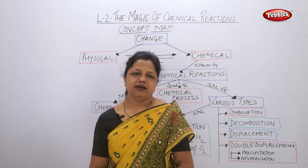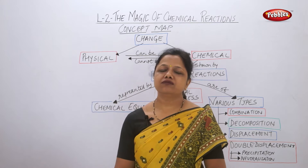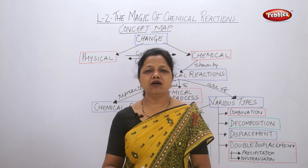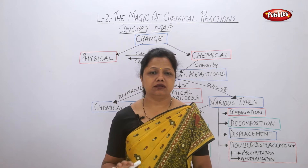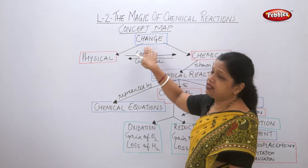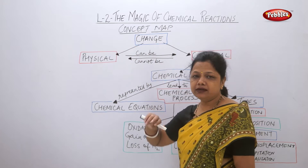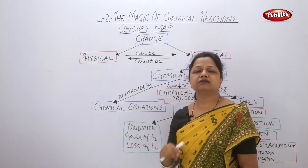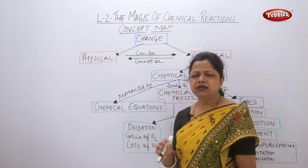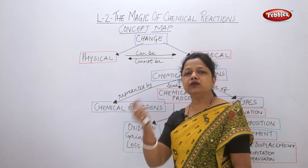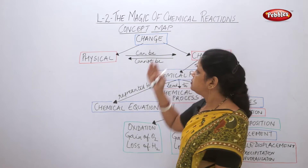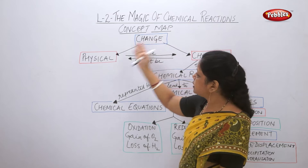Hello students, we had finished with the explanation of lesson 2: The Magic of Chemical Reactions. Now we'll go through the flowchart to review what we have done. What is change? We have studied that there are changes taking place in the surroundings. Some new thing is formed, some new state of the substance comes out — that is called a change.